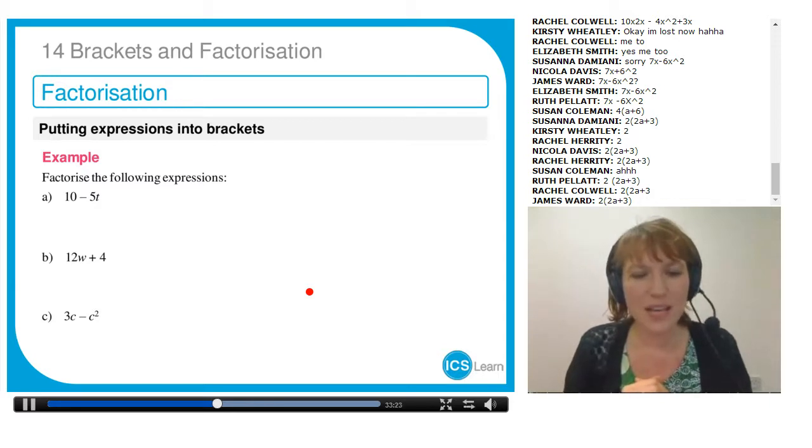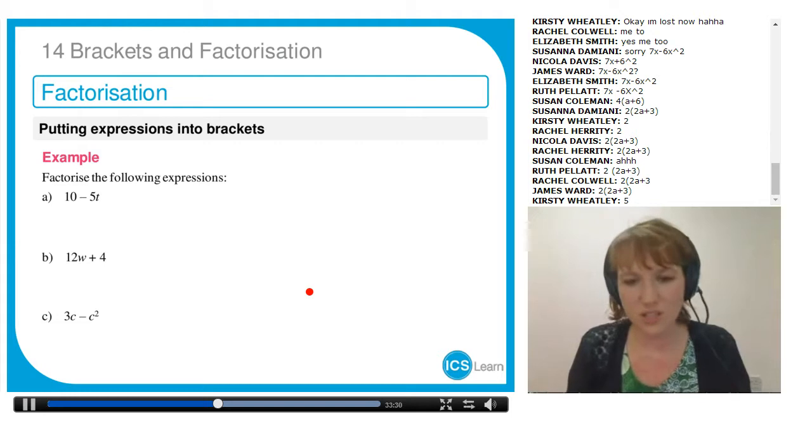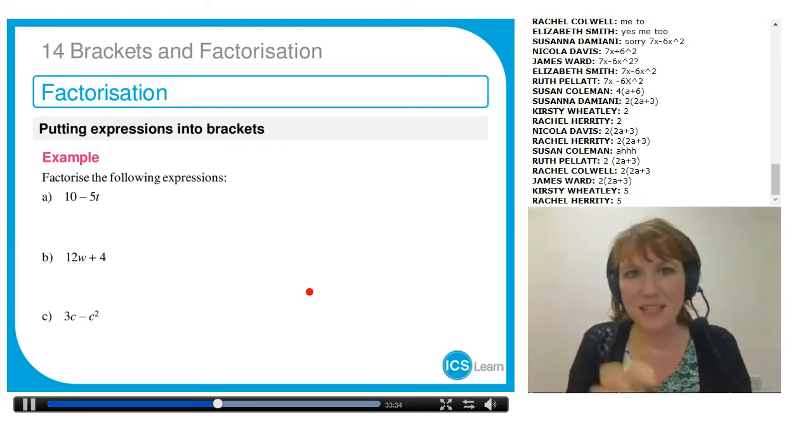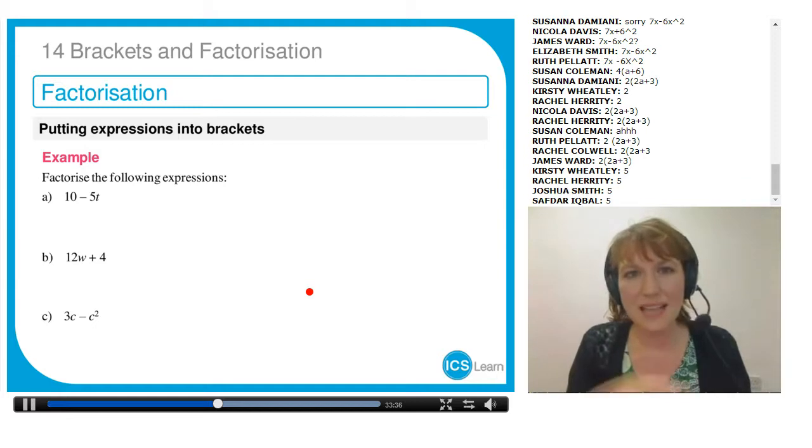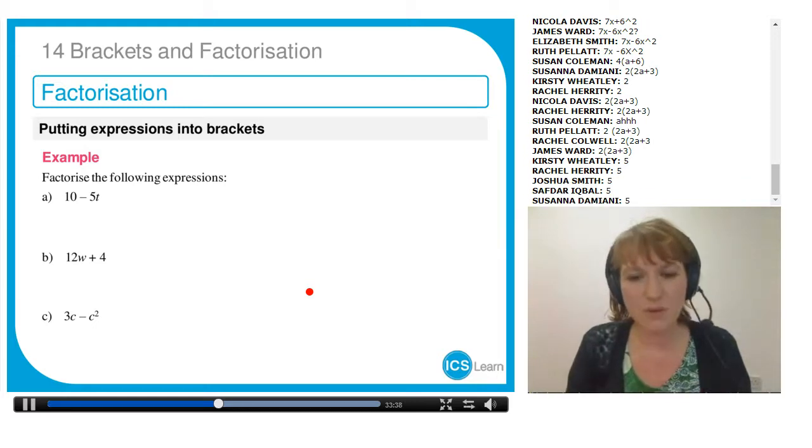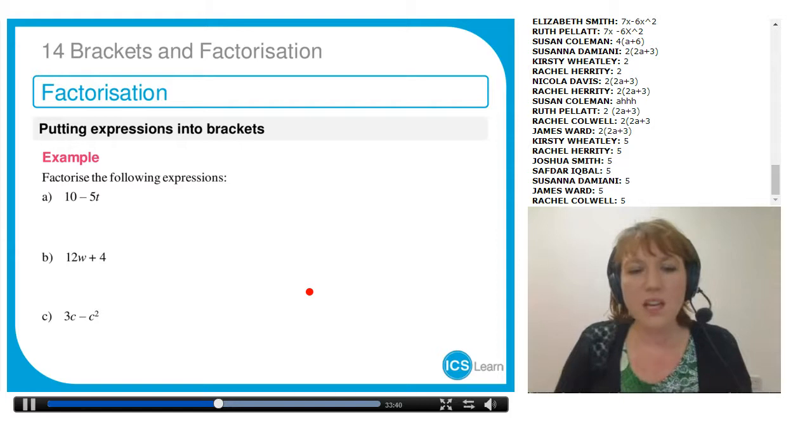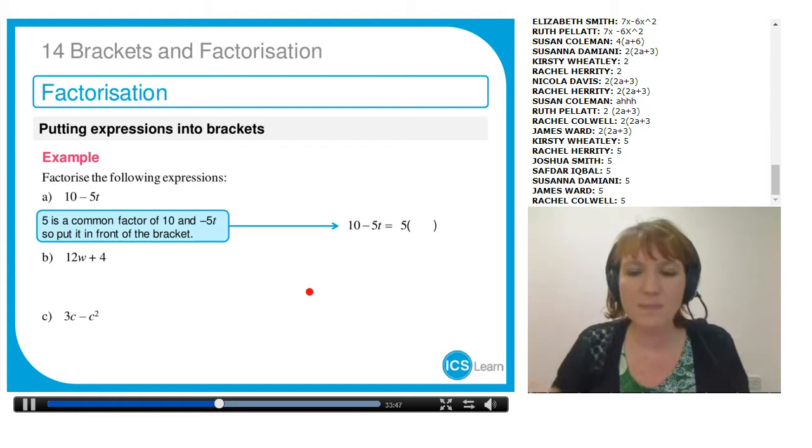Let's have a quick look at part A: 10 minus 5t. Tell me what the common factor is. I don't want you to factorize it just now. Just tell me what the common factor is. What is the biggest number or letter that divides exactly into both of those? Brilliant, 5. So 5 goes into 10 and 5 also goes into minus 5t. It's the 5 that I'm going to put in front of the brackets.